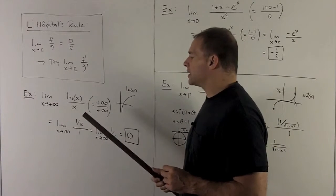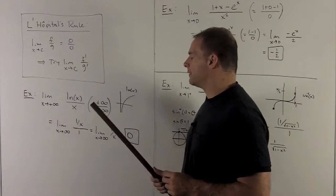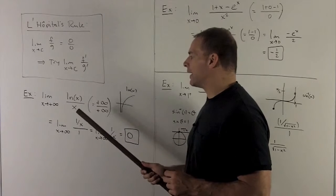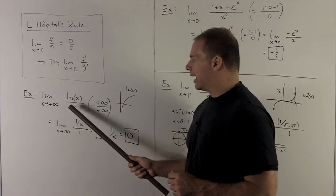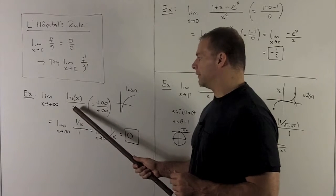Let's try an infinite limit in this case. We're going to go out to plus infinity for natural log of x over x. Now, x will go out to plus infinity for sure.